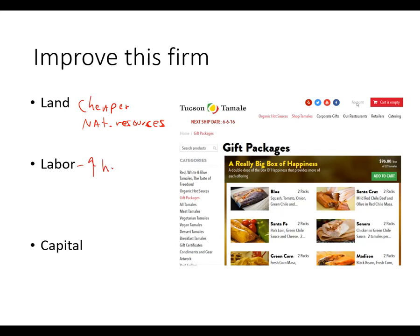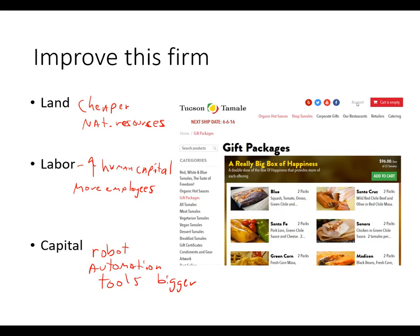For labor, I could get more human capital — the training and skills employees have. I could hire more employees, get more skilled workers, or create incentives to get them to work harder. I could even hire more workers at lower wages, though you'd have to worry about productivity. For capital goods, something like a tamale-making robot — automation that puts the husk on faster — or better tools, or a bigger facility.